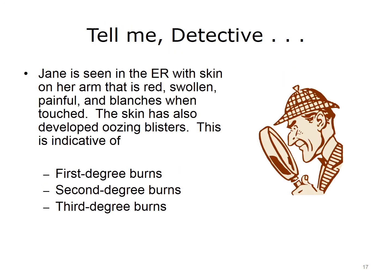Now let's put some of this information to use to solve the following mystery. Jane is seen in the ER with skin on her arm that is red, swollen, painful, and blanches when touched. The skin has also developed oozing blisters. This is indicative of which condition — first degree burns, second degree burns, or third degree burns? The answer is second degree burns. Second degree burns damage the outer layer and the layer underneath it, and are also referred to as partial thickness burns. They are pink or red, swollen, and painful, and develop blisters that may ooze clear fluid. The burned area may blanch when touched.